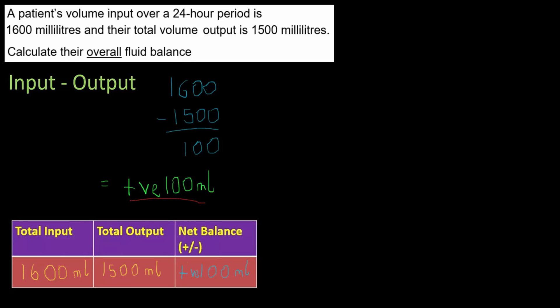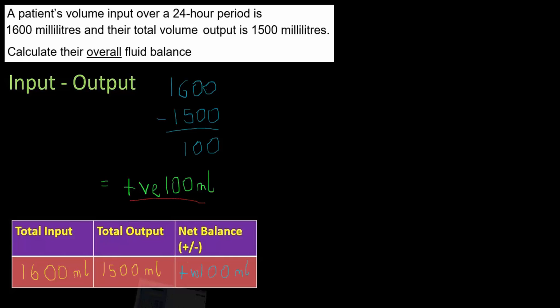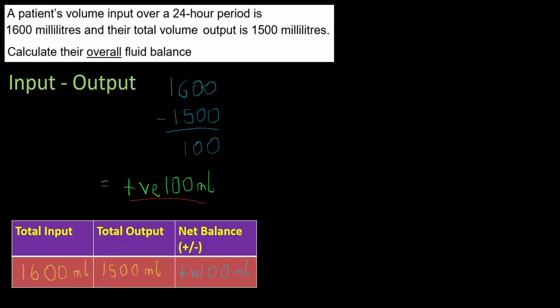But either way my final answer is positive 100 millilitres. Now I know I'm laboring the point but let's check that with the calculator. Turn it on and clear the memory. 1,600 take away 1,500 is indeed positive 100 millilitres. Okay I know that was a very easy one but I just wanted to start us off nice and easy.